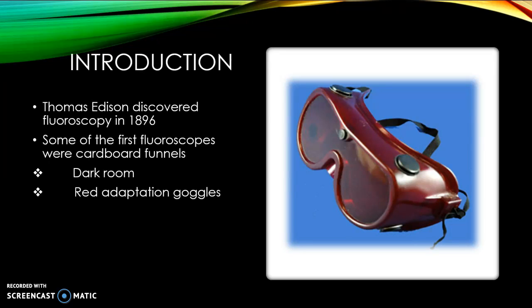Some of the early fluoroscopes were actually made out of cardboard funnels, open at the narrow end for the observer's eyes, while the wide end was closed with a thin cardboard piece covered on the inside with a layer of fluorescent metal salt. This had to be done in a dark room due to the limited light produced by the fluorescent screens.